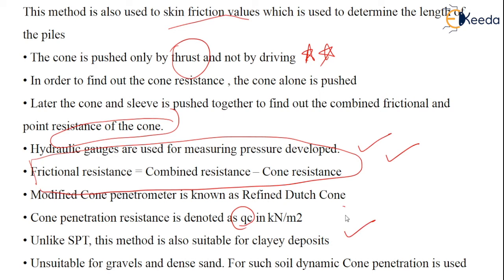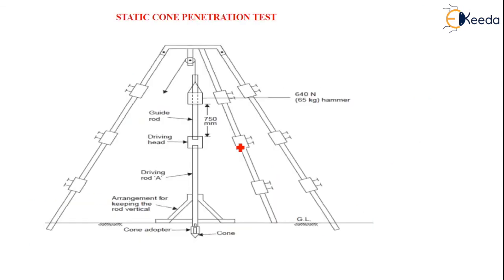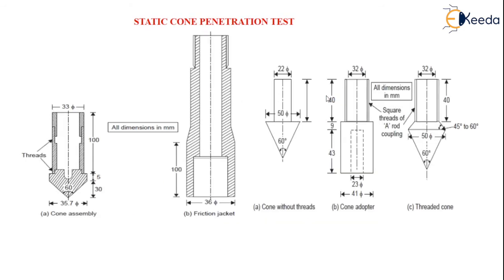The SPT tester is not suitable for clay deposits and is also unsuitable for gravels and dense sand — for such soils, the Dynamic Cone Penetration Test is used. The SCPT equipment consists of a cone adapter, a cone for advancement, a driving rod, a driving head, a guiding rod, and a hammer of 65 kg. The cone assembly includes a friction jacket, a cone without threads, a cone adapter, and a threaded cone.